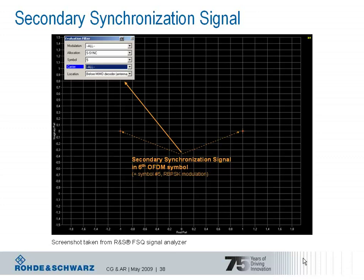The combination of the two used sequences defines the physical layer cell identity group. Like the primary synchronization signal, the secondary synchronization signal is also transmitted on 62 out of 72 reserved subcarriers around the unused DC subcarrier.